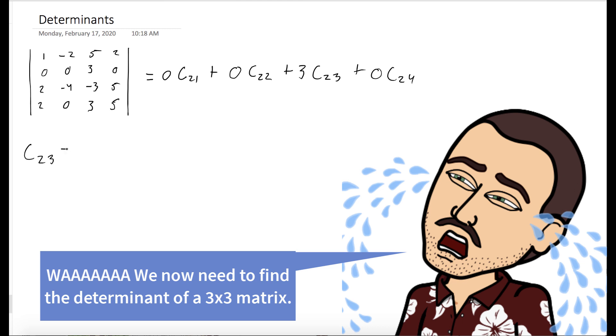Our question really boils down to, what is C2,3? Well, it's negative 1 to the 2 plus 3 times the determinant of the matrix formed by removing the second row in the third column from the matrix we started with.